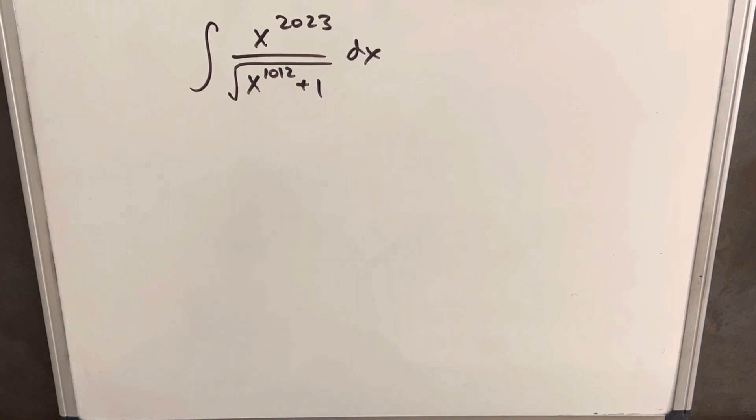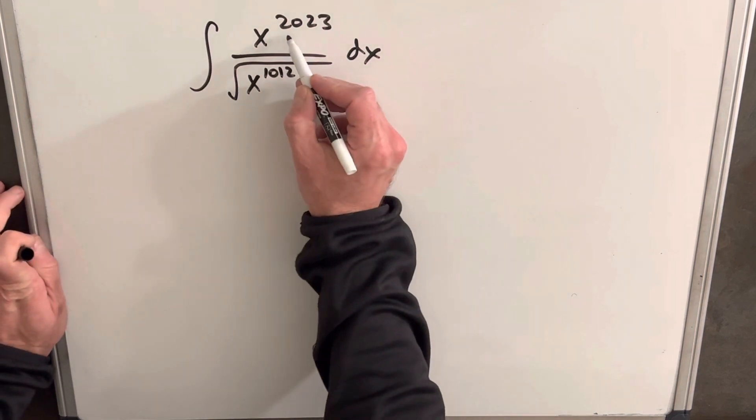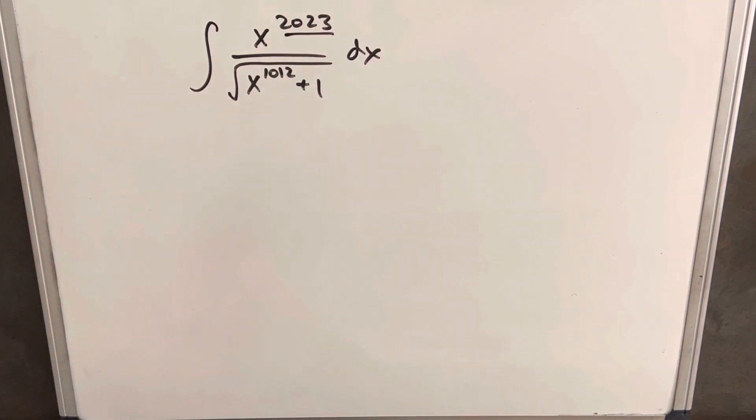Hey, so I always wanted to create my own problem where I have the year in it, so finally I've done that. We have the new year 2023 in here. We've got the integral from 2023, integral of x to the 2023 over the square root of x^1012 plus one.